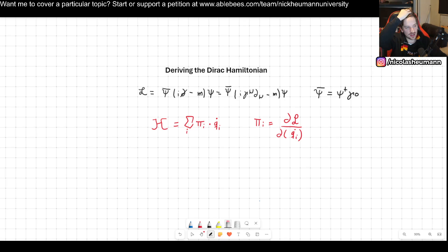Welcome! In this video I will show you how to derive the Dirac Hamiltonian starting from the Lagrangian. Now this is something that we are going to need because we are about to start quantizing the Dirac field, finally going from classical field theory to quantum field theory.